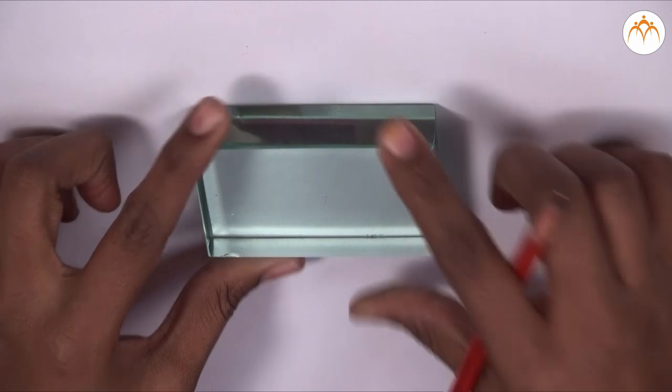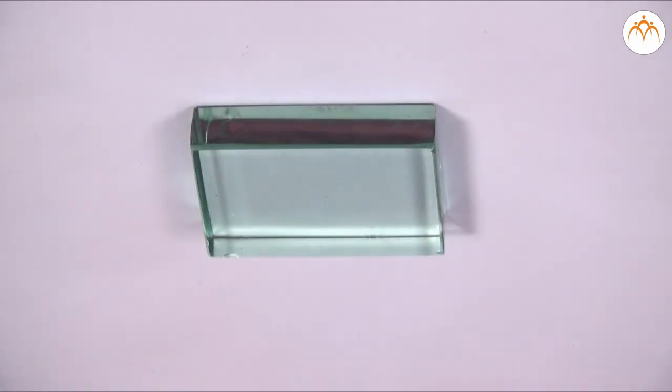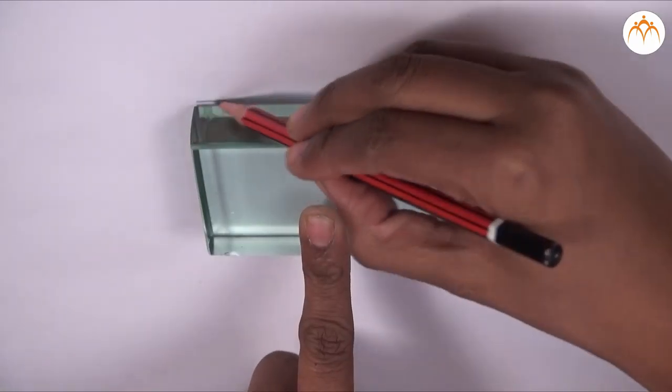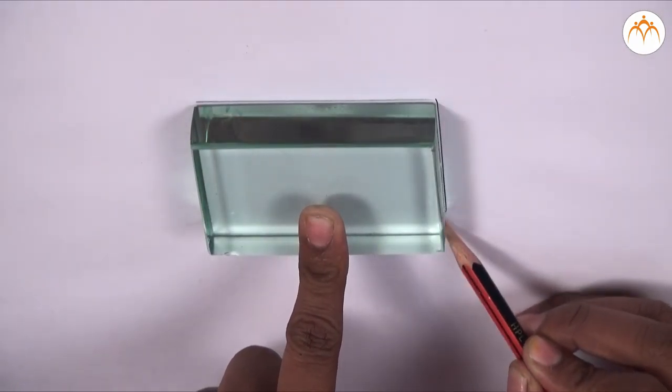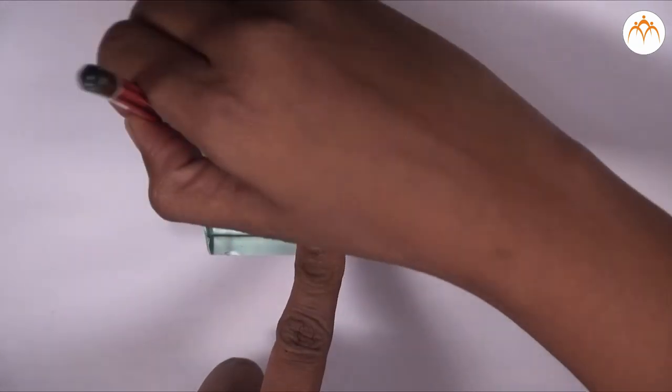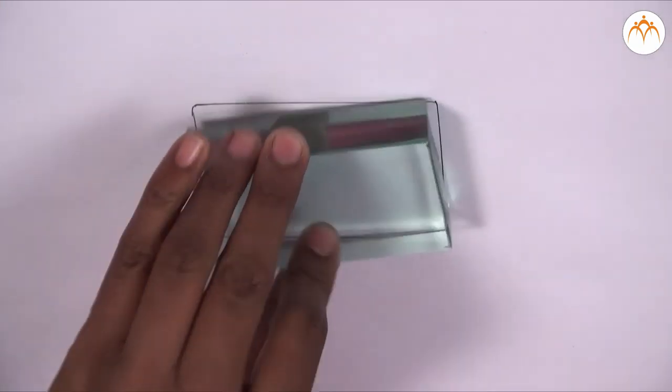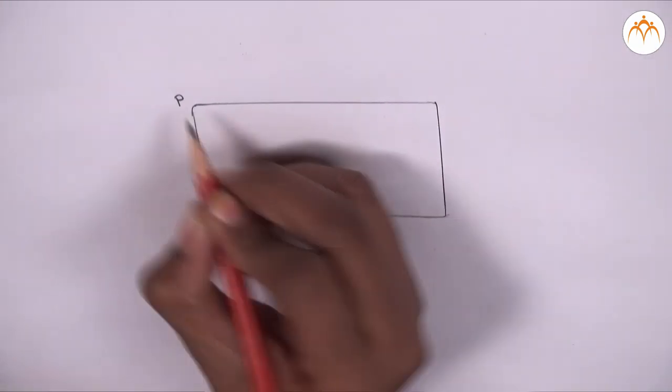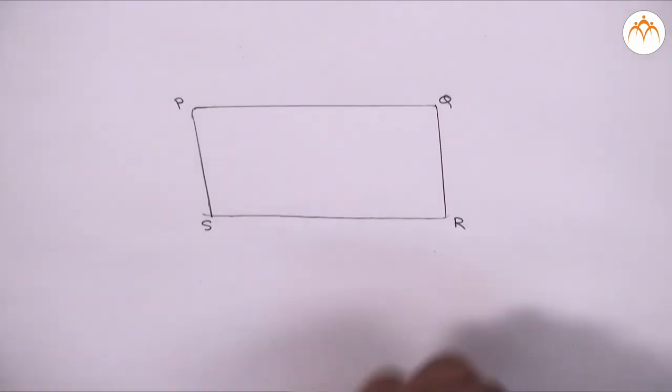We fix the paper on drawing board properly using drawing pins. We place the glass slab on this paper at the center and we draw the boundaries of the slab on the paper with a pencil, PQRS. The pencil has to be sharp for accuracy.